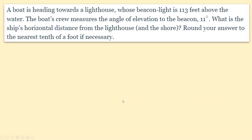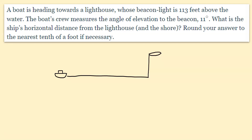Let's look at another example. A boat is heading toward a lighthouse whose beacon is 113 feet above the water. The boat's crew measures an angle of elevation to the beacon of 11 degrees. What is the ship's horizontal distance from the lighthouse? So we draw a boat traveling toward a lighthouse, and the beacon is 113 feet above the water — that distance is 113 feet.